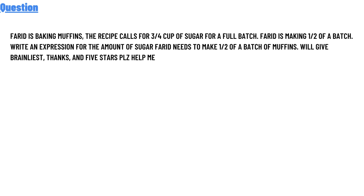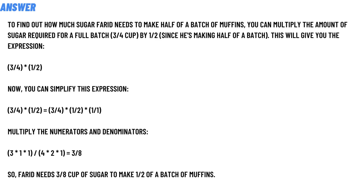The correct answer: to find out how much sugar is needed to make half of a batch of muffins, you can multiply the amount of sugar required for a full batch — three divided by four cups — by one divided by two, since we are making half of a batch. This gives you the expression: three divided by four multiplied by one divided by two.